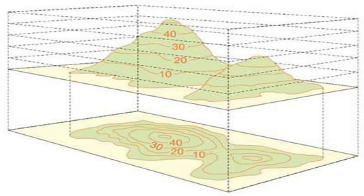Surveyors were led by Charles Hutton, and they took many thousands of measurements. To aid calculating the volume, he had the idea of set heights above sea level. This is now in common use as contour lines.